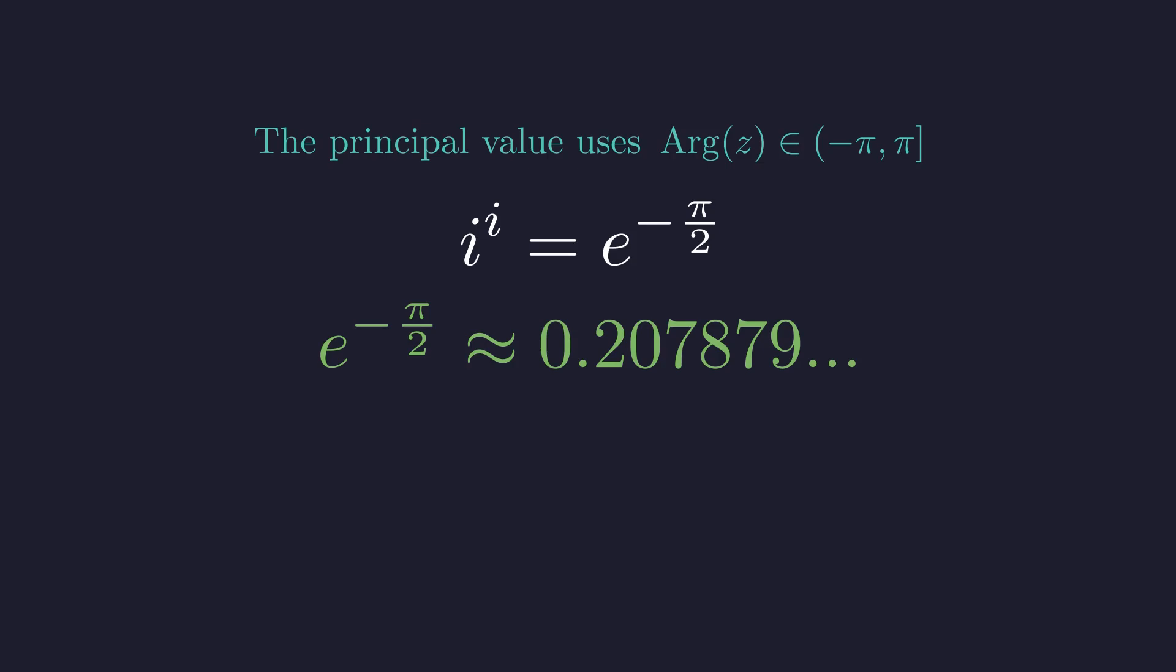A perfectly concrete real number. But this is where the story gets truly mind-bending. This isn't the only answer. Because our general form depends on the integer k, we have an infinite family of solutions. Let's see what some of the others look like.